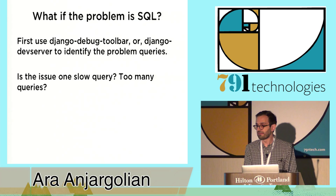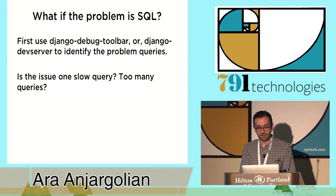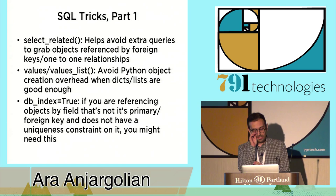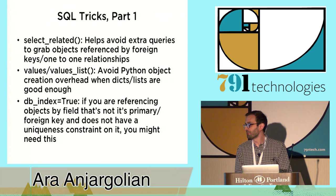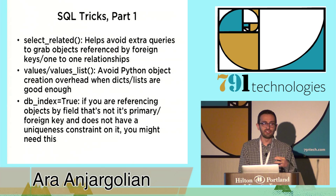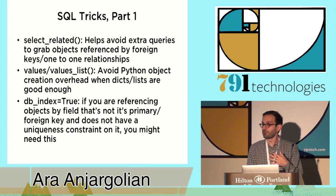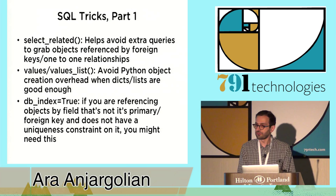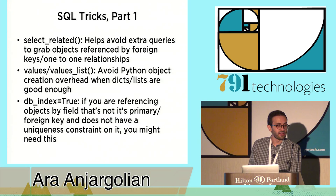SQL problems typically fall into one of two big categories: one, the SQL query you're doing is taking too long; two, you're doing too many SQL queries. Each has different ways to solve. Every Django release seems to add another way to get around a SQL issue. Since the days of 1.0, `select_related` has been around, and each release they've been adding different ways to get your SQL to do what you want.